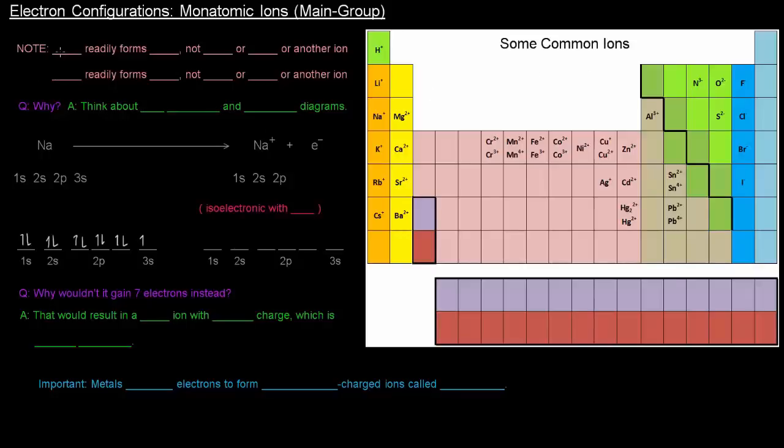A quick note: sodium, the alkali metal, readily forms the Na+ ion. It doesn't form a +2 ion or a minus ion or any other ion other than Na+. Why is that? Chlorine readily forms Cl-, not Cl+. Why?